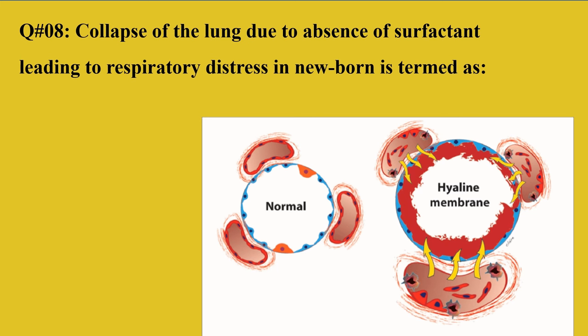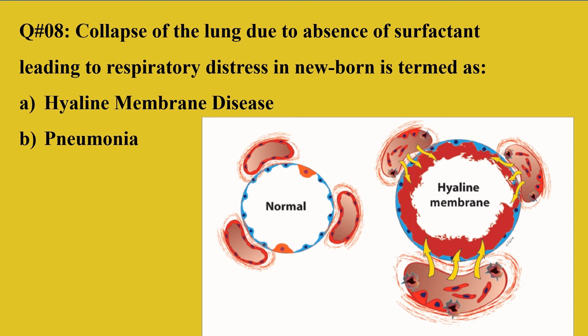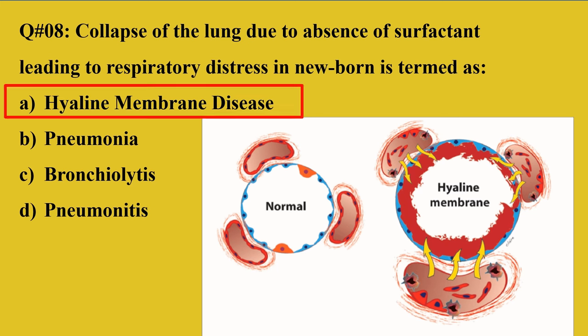Question 8: Collapse of the lung due to absence of surfactant leading to respiratory distress in newborns is termed as? A: Hyaline membrane disease, B: Pneumonia, C: Bronchiolitis, D: Pneumonitis. The right option is A. Without surfactant, the hyaline membrane is disrupted, leading to hyaline membrane disease in newborns.